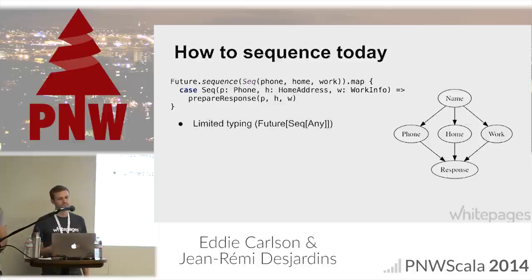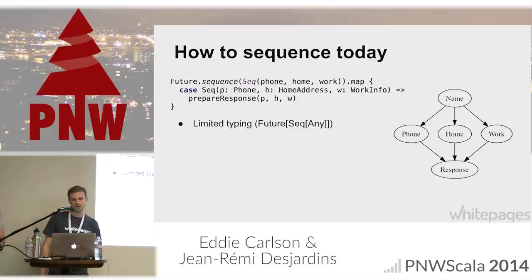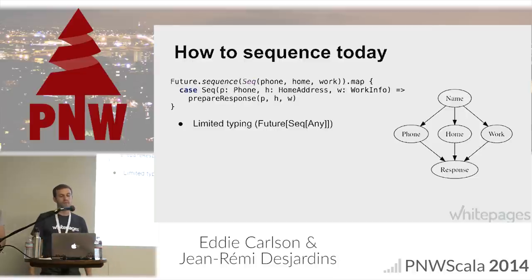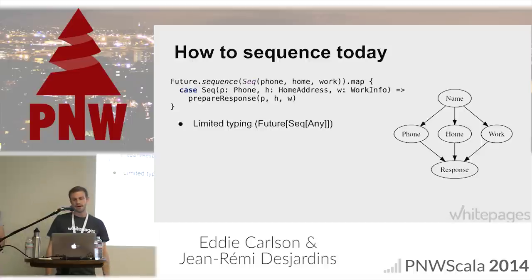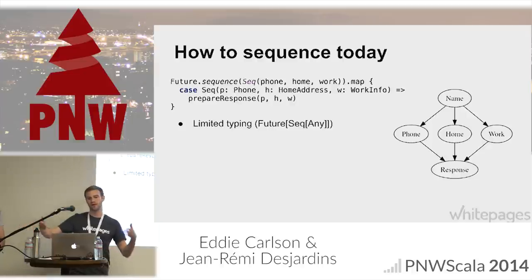There are a couple problems: there's limited typing. You can see in the match statement, I had to put in 'P is Phone, H is HomeAddress, W is WorkInfo.' That's bad for a couple reasons. If I screw up the ordering, it will still compile and look fine, but then I'll get a match error at runtime. Another reason is if my type names are very long or if I have a ton of them, it becomes unwieldy. This line could be super long and just looks ugly and terrible.